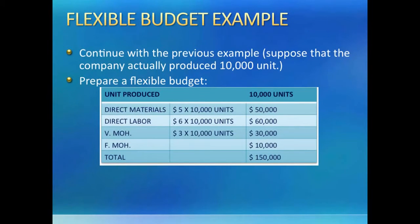Let us continue with the previous example and make a flexible budget. The company actually made double of what it planned to make. It is like saying that if the company could foresee making 10,000 units instead of 5,000, what budget would it have made? We take the per unit cost of all inputs from the static budget and multiply by actual production to make a flexible budget. Notice that fixed cost is not changing — we plan to spend this much on fixed cost regardless of units produced, so only variable cost can be flexed. Also notice that to make double the units, the cost did not double because of fixed costs. Total cost is less than double, and per unit cost has come down from $16 to $15.